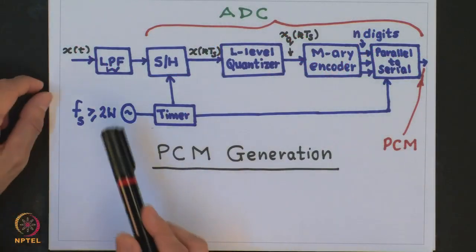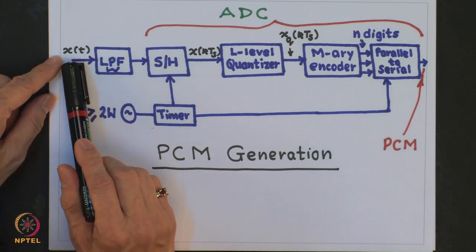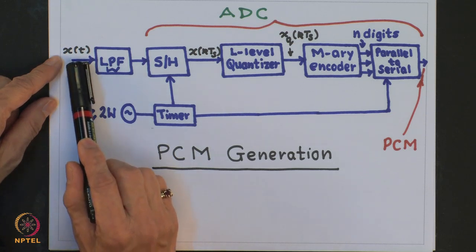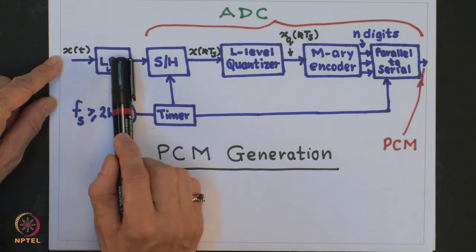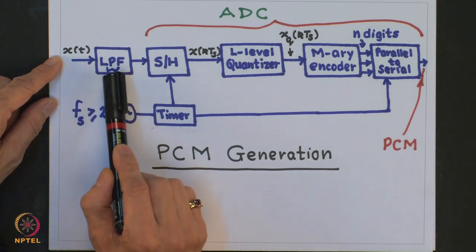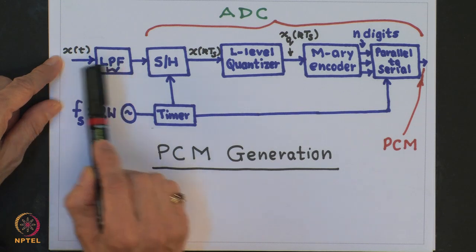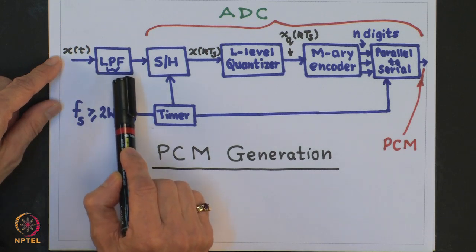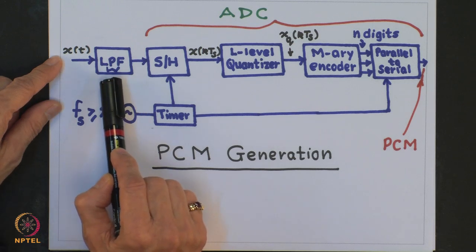Transmission of the digital data so produced is really a different topic. We will now quickly study the basic functional blocks of a PCM system, as shown in the figure. We have the input x(t), which is band-limited to some bandwidth W and is of a low-pass nature. This passes through a low-pass filter, which limits the bandwidth of the input signal to W and helps in mitigating the effect of aliasing error due to sampling.